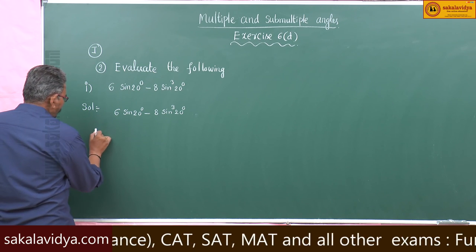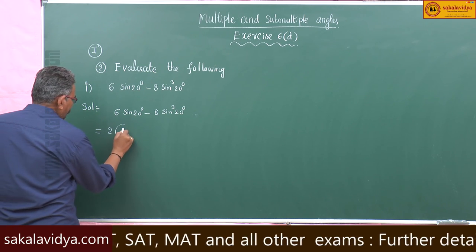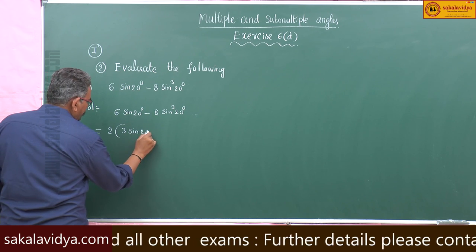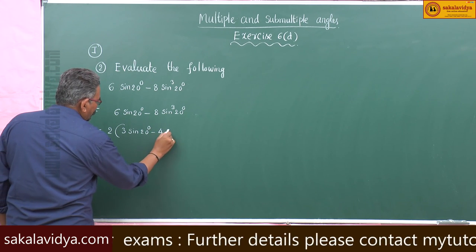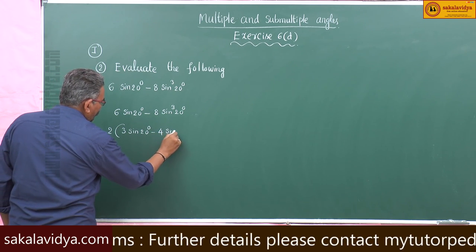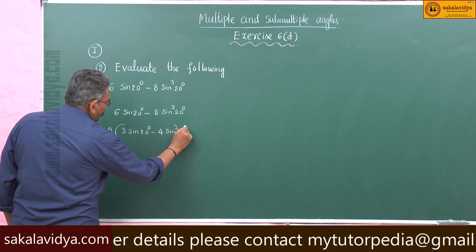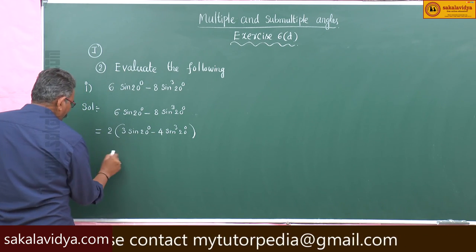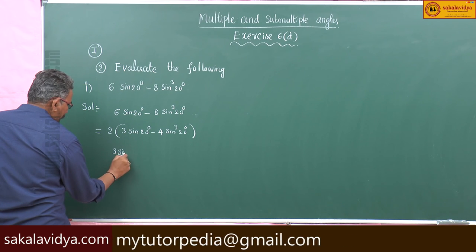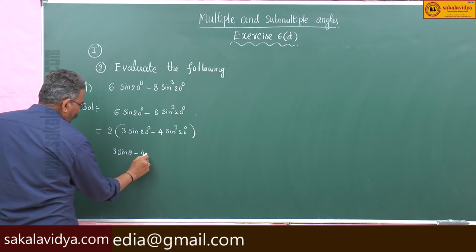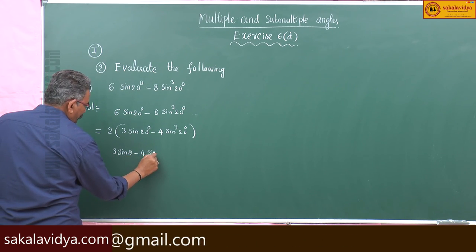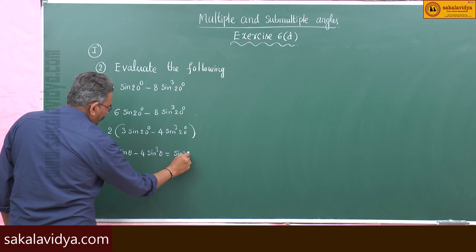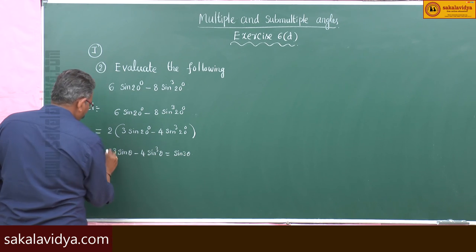Take 2 common; we get 2 times (3 sin 20 degrees minus 4 sin cube 20 degrees). This is nothing but 2 times (3 sin θ minus 4 sin cube θ), which equals 2 sin 3θ by the formula.